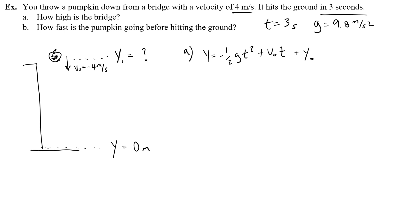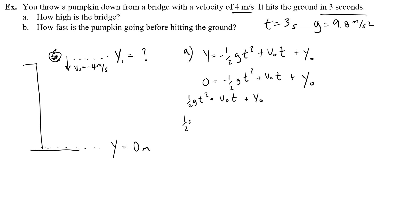Before I plug anything in, I'm going to get rid of anything that's 0 and then rearrange to solve for y₀, the thing we're looking for. The only thing that's 0 is the final height, y = 0. So we have: 0 = negative one-half g·t² + v₀·t + y₀. To figure out y₀, I'm first going to add one-half g·t² to both sides, and then subtract v₀·t from both sides.